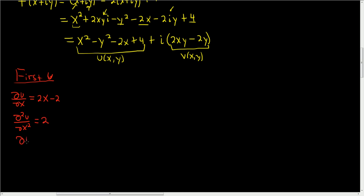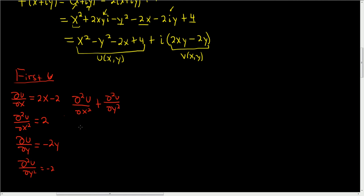Now taking the partial derivative of u with respect to y, holding x constant, we end up with negative 2y. Taking the second partial gives negative 2. Adding the second partial of u with respect to x to the second partial of u with respect to y, we get 2 plus negative 2, which equals zero. This holds for all x and y, so for u we are done.